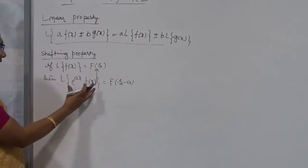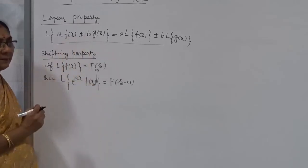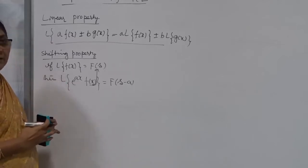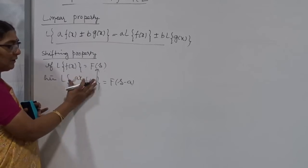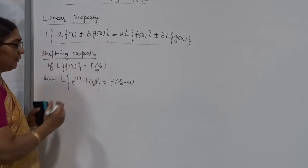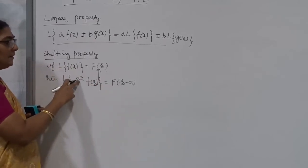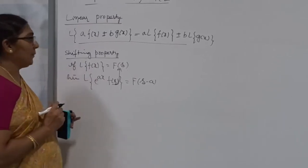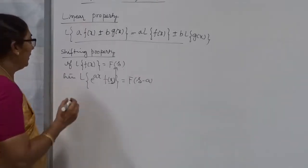Instead of applying the Laplace Transform to the entire function e^(ax)·f(x), which gives a very complicated result, you take the function other than the exponential, find its Laplace Transform, and then replace S by S minus the coefficient of x in the exponential. Using this property, very complicated functions can be solved easily.